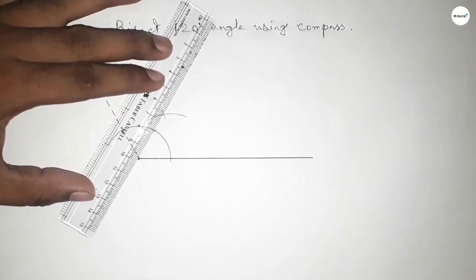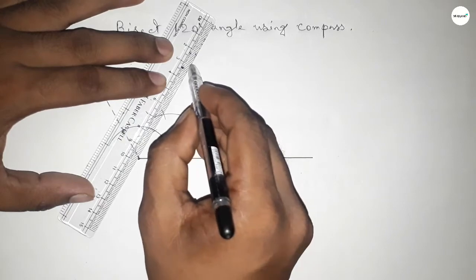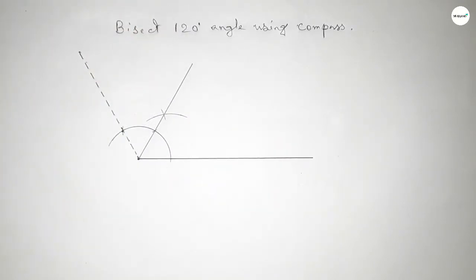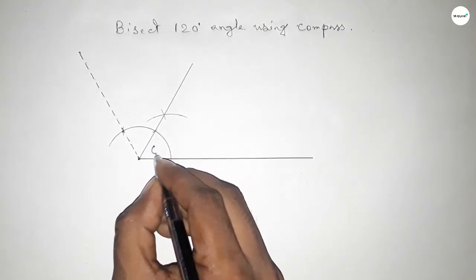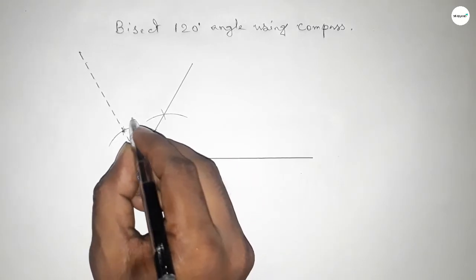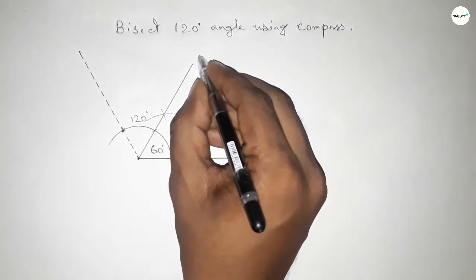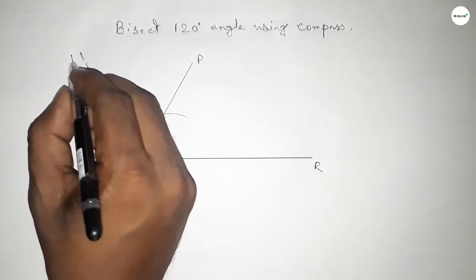Now joining this to get a 60-degree angle or bisection of 120-degree angle. So we got a 60-degree angle. This is the 120-degree angle. This is P, Q, and R, and this is T.